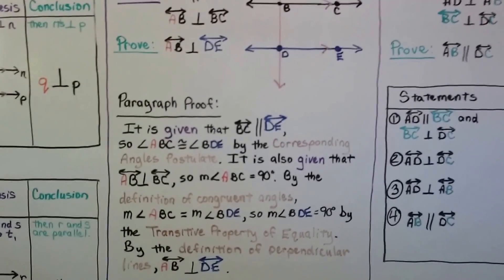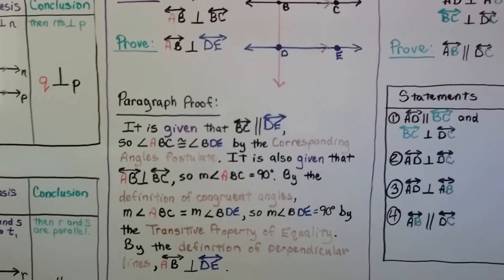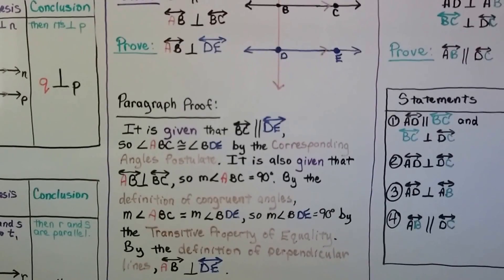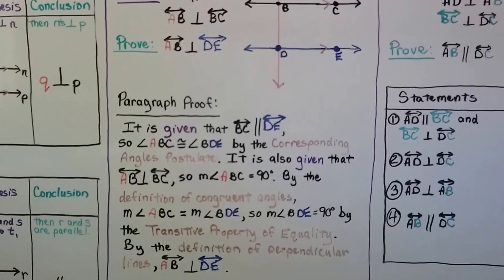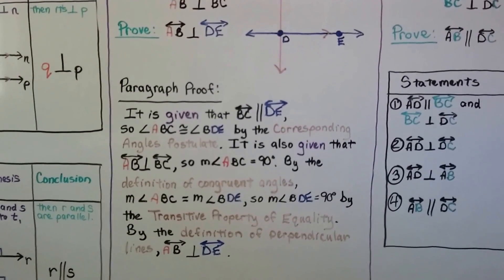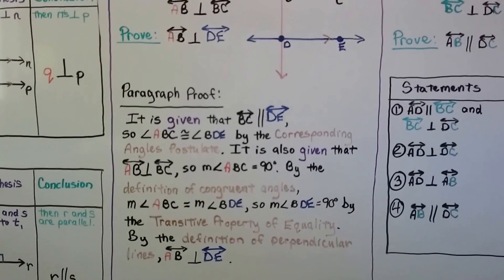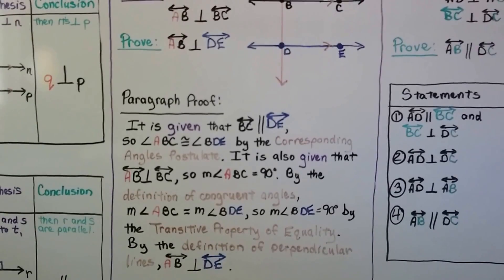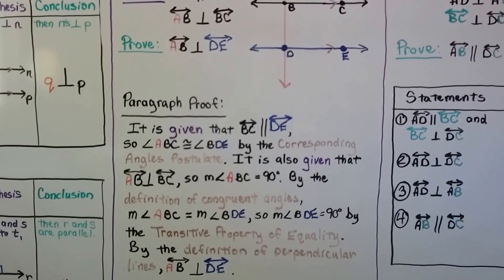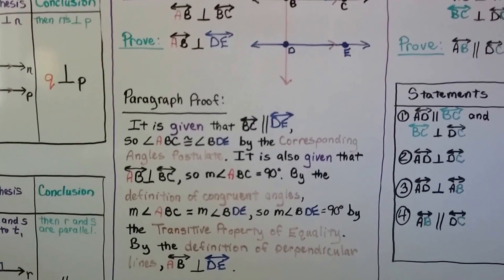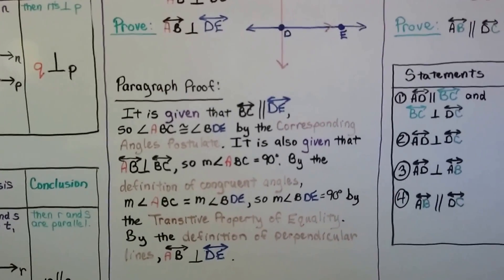The transitive property says if one equals two and two equals three, then one equals three — they all equal the same thing. And by the definition of perpendicular lines, line AB is perpendicular to DE, the blue line. That could even be turned into a two-column proof — we did that before.